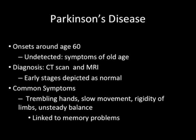Parkinson's disease usually onsets around age 60. It is often undetected because symptoms are generally associated with old age, such as slow movement, unsteady balance, and trembling of hands. It is usually diagnosed with CT scan and MRI; however, the early stages of the brain in these scans are depicted as normal. It has also been linked to memory problems such as dementia.